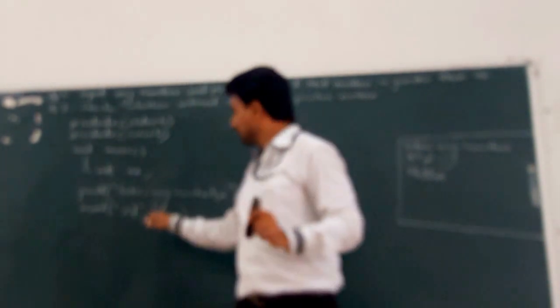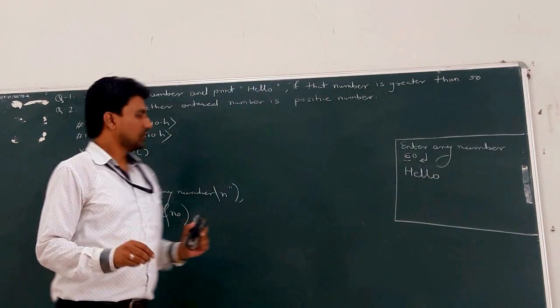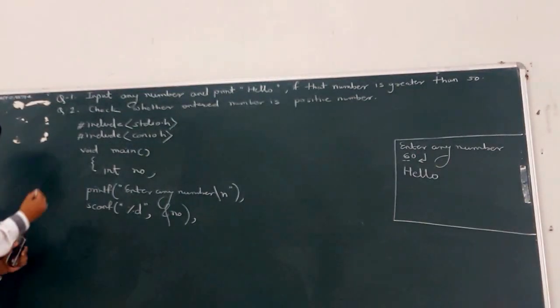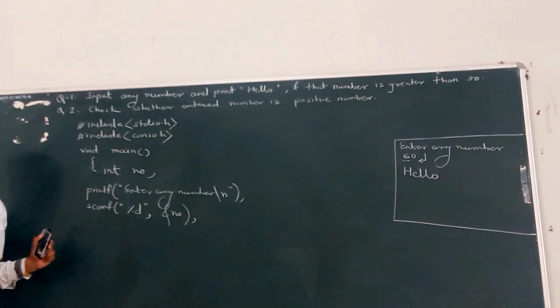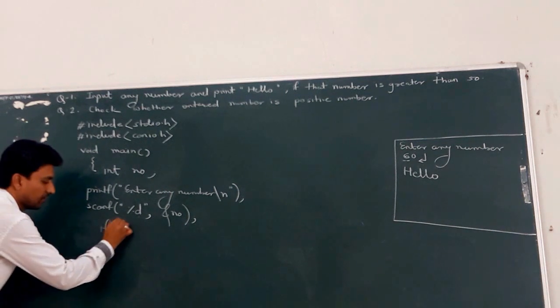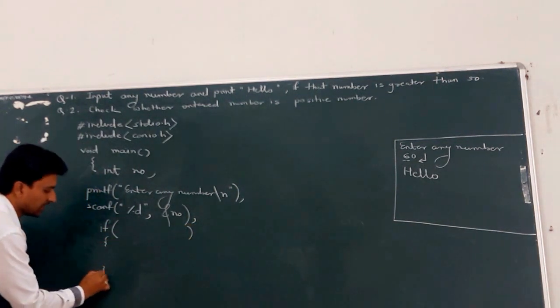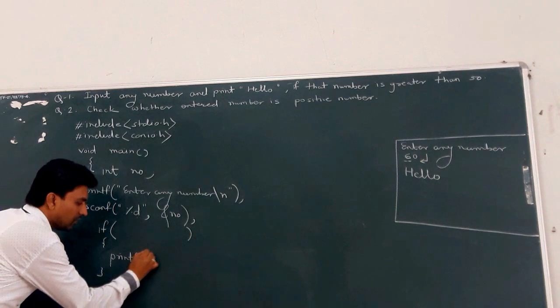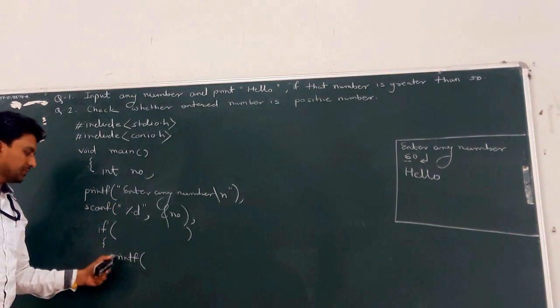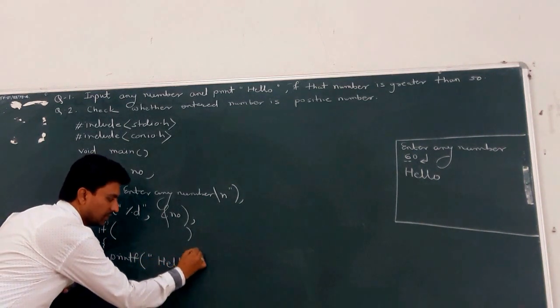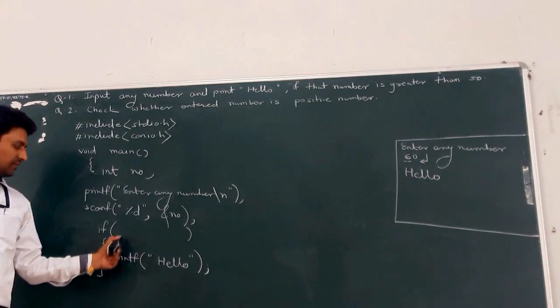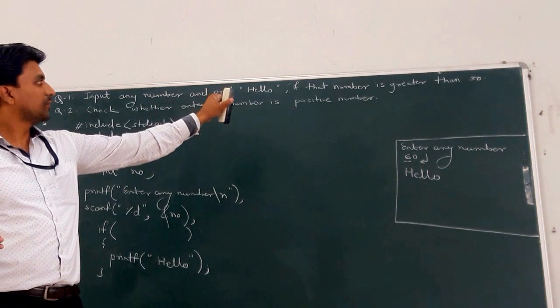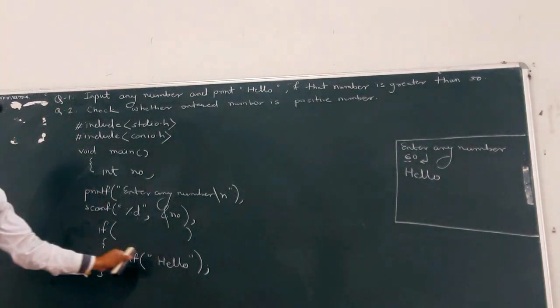At the next line, we want to check what value the user entered in variable number. Check using a control statement — the selection or branching statement: if, then condition, then body of if. We know what the body of if is — we print 'hello' if the condition is true. The body of if is: printf("hello"). What is the condition? Number is greater than 50 — then and then only we print hello on the console.